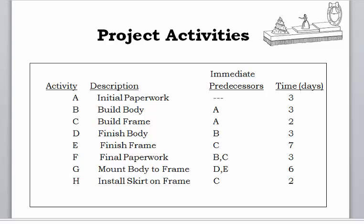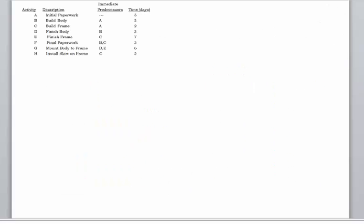It has eight different activities, starting from A through H. A small description for every activity is given to you. The immediate predecessors are listed, and the duration on every activity is also provided. Meaning, initial paperwork would take three days, the body of the float itself would take three days, building the frame would add two more days, and so on. Based on this information, we'll create a project network.